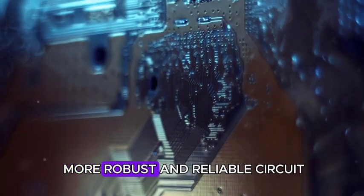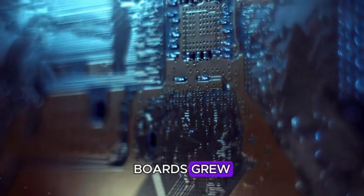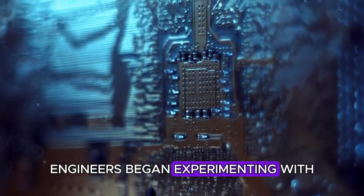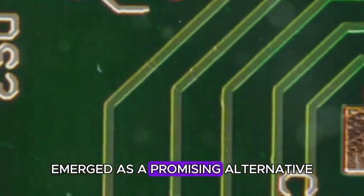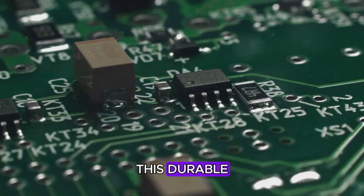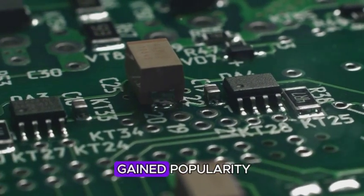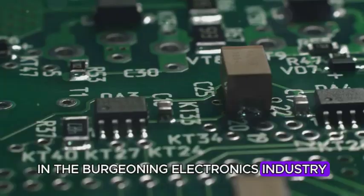As the need for more robust and reliable circuit boards grew, engineers began experimenting with other materials. Bakelite, an early plastic, emerged as a promising alternative. This durable and insulating material quickly gained popularity in the burgeoning electronics industry.